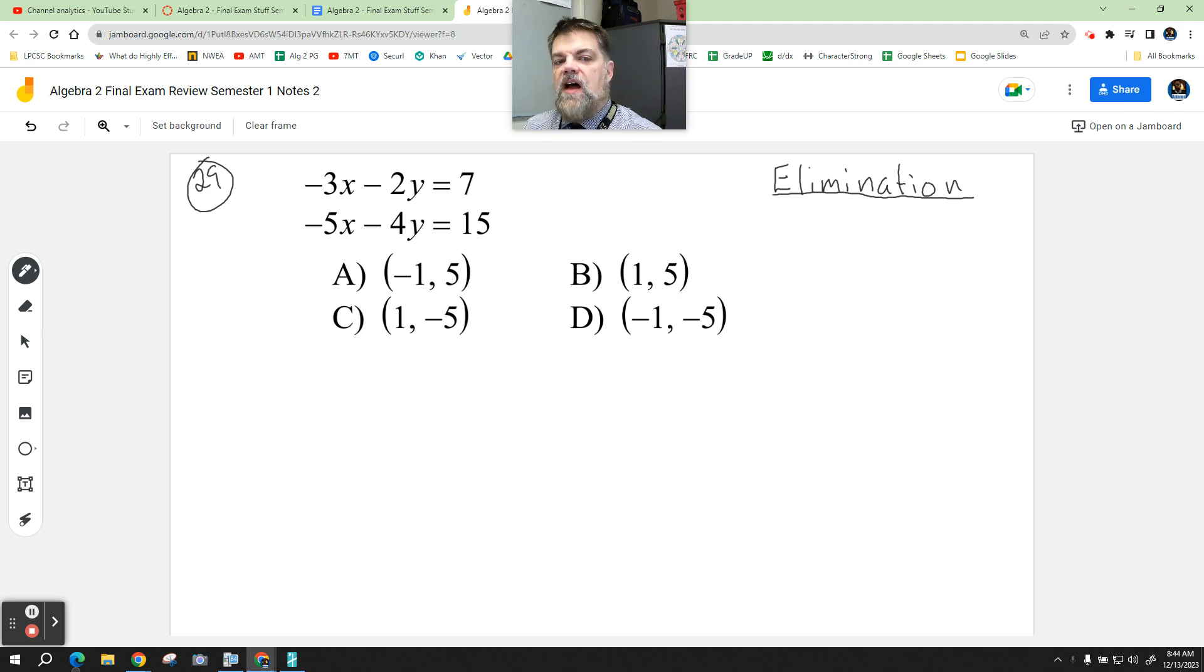So I need to cancel out either an x or a y, and I need to multiply something by something. Well, I see that 2 and 4 could be canceled, but I need this term right here to be a positive 4y. Now, the only way I can make that a positive 4y is to multiply everything by negative 2.